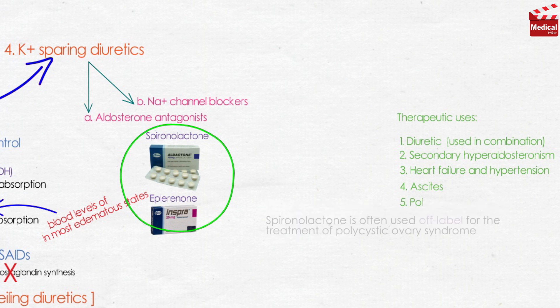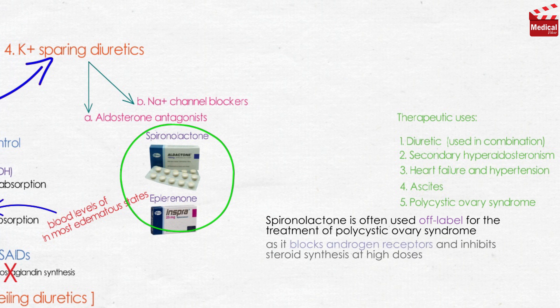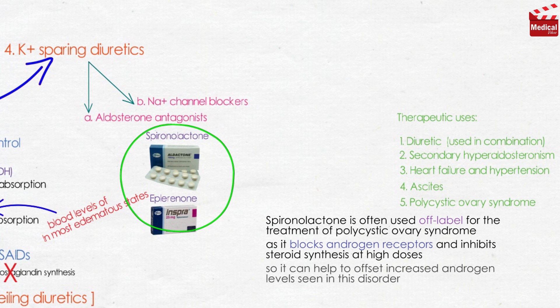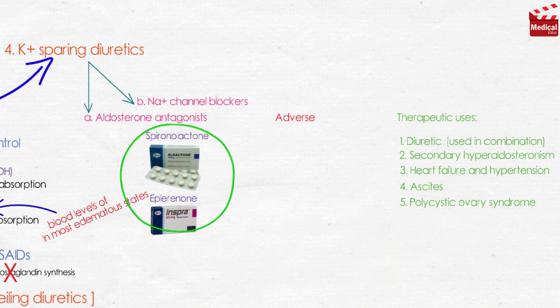Spironolactone is often used off-label for the treatment of polycystic ovary syndrome, as it blocks androgen receptors and inhibits steroid synthesis at high doses, so it can help to offset increased androgen levels seen in this disorder.